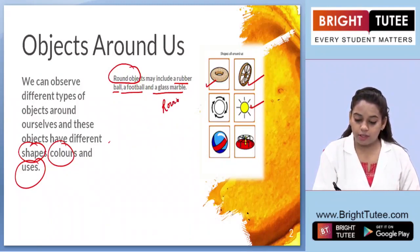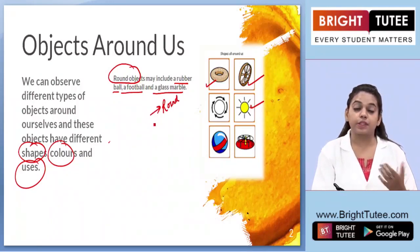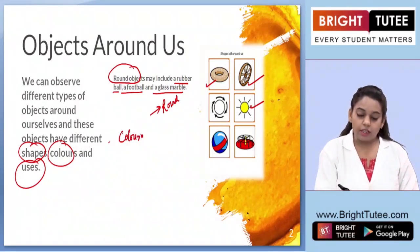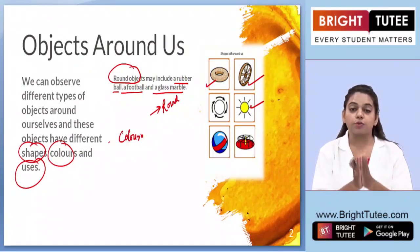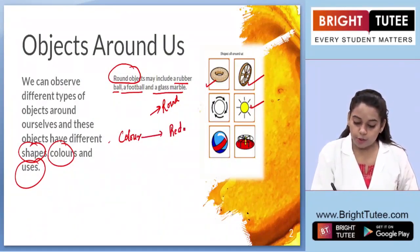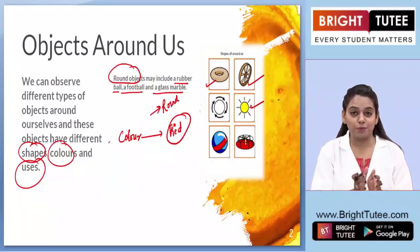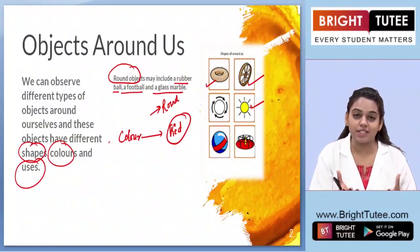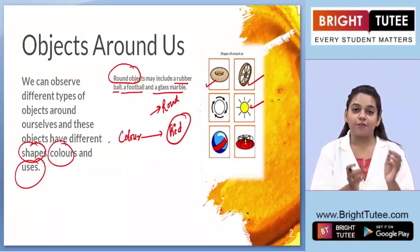Similarly, you can group the objects as per their color. For example, if your teacher asks you to write down all the objects around yourself that are red in color, you will be able to group them and figure out what all objects are red in color.